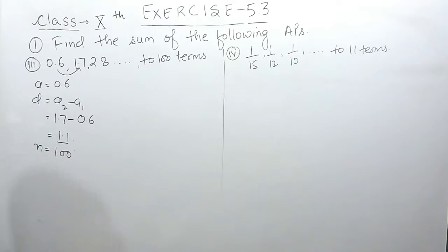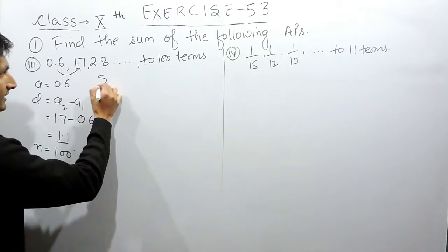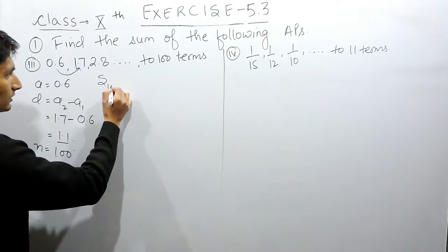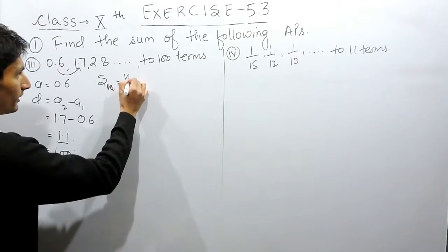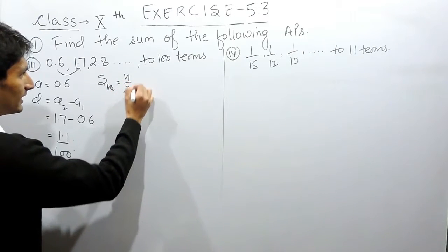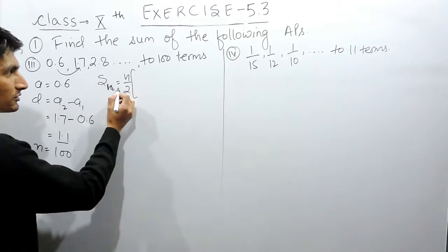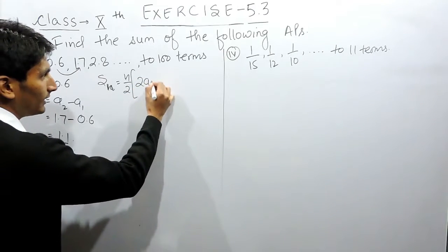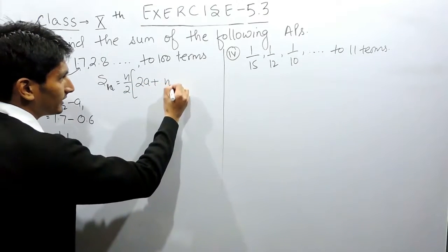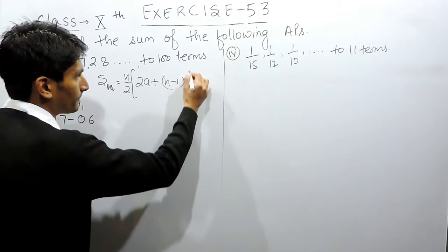You have to find the sum of 100 terms. To find the sum of n terms we have a formula which says that sum of n terms equals n by 2, multiplied by 2a plus n minus 1 into d.